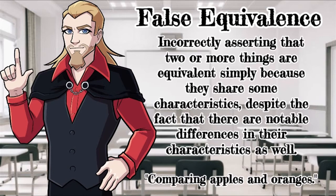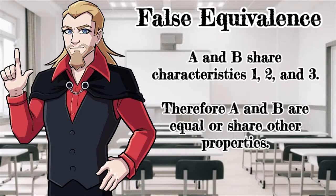In its logical form, it looks like this: A and B share characteristics 1, 2, and 3. Therefore, A and B are equal or share other properties.